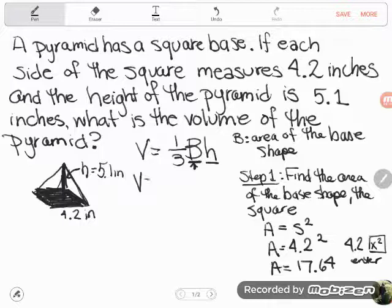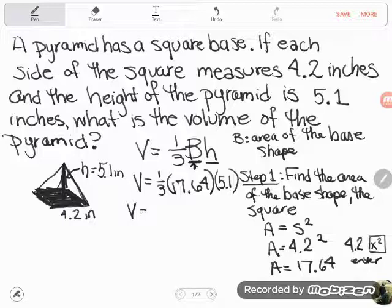That was what Big B stood for. So I'm going to take this answer that I just found, and I'm going to plug it now into my volume formula. I now have one-third. I know my Big B is 17.64, because B stands for area of the base shape. And then this H is height of the pyramid, and we know the height of the pyramid is 5.1 inches.